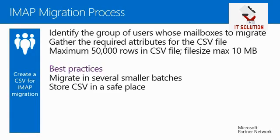A CSV file for an IMAP migration can have a maximum of 50,000 rows. If you need to migrate thousands of mailboxes, it is a good idea to migrate users in several smaller batches. Also, store the CSV file in a secure environment, as it contains credentials of the migration admin user or individual users — make sure to prevent compromising the CSV file.